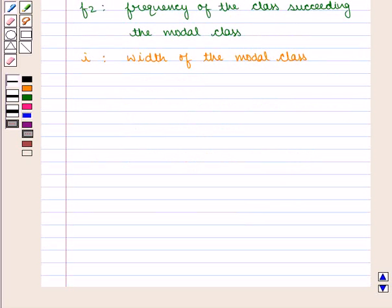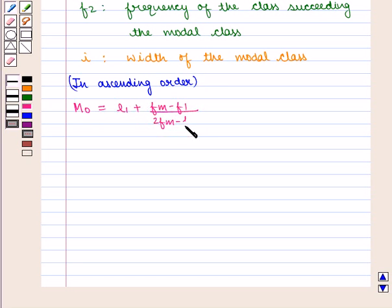The formula is applied in the following forms depending on whether the series is given in ascending form or descending form. If the series is given in ascending order, mode M0 is given by L1 plus (Fm minus F1) upon (twice of Fm minus F1 minus F2) into I.